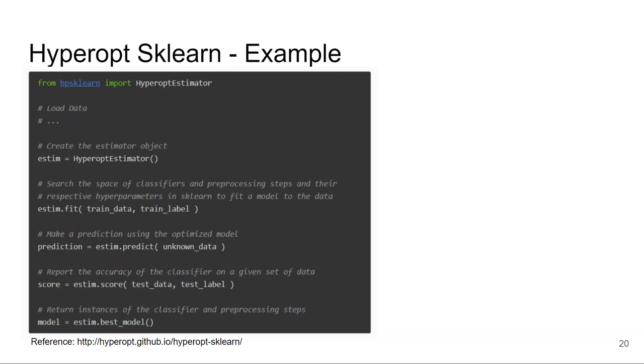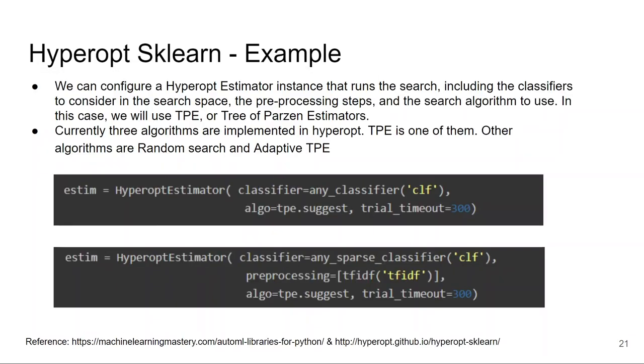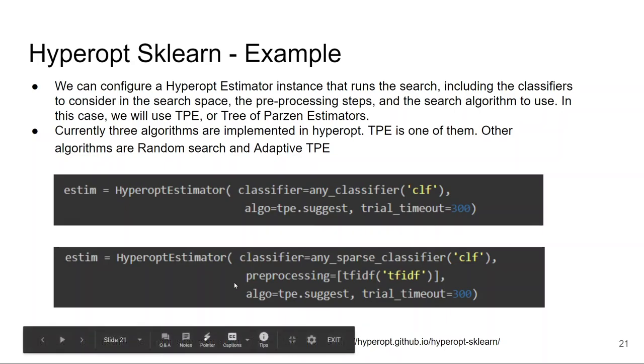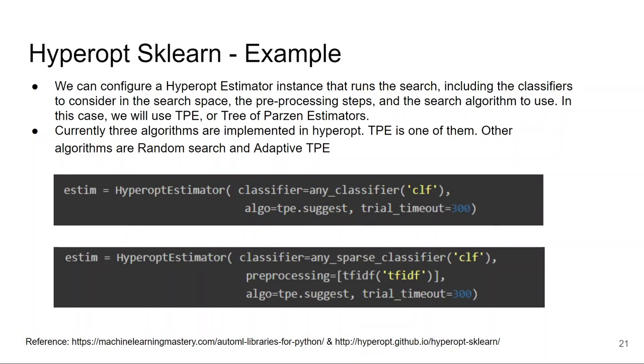The best part of Hyperopt-sklearn is you can specify the search space. For example, you can specify which algorithm to use or which preprocessing methods to use. If you see here, let's say the input dataset is text, so I just want to use TF-IDF as preprocessing method and any sparse classifier. If you know which algorithm works best, you can specify them before itself so that you can reduce the runtime. You can also specify any classifier so that it searches all possible classifiers.